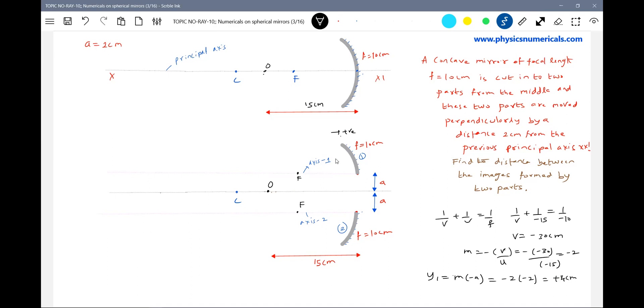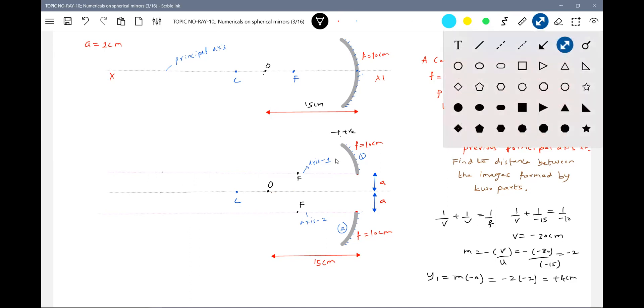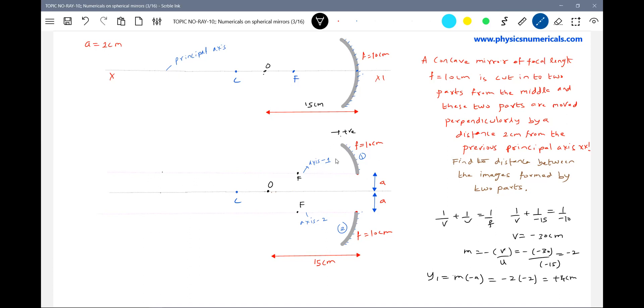So 30 centimeters - from here I should measure 30 centimeters. Let me indicate here, 4 centimeters from this one. So this will be I1.